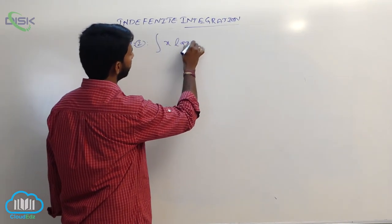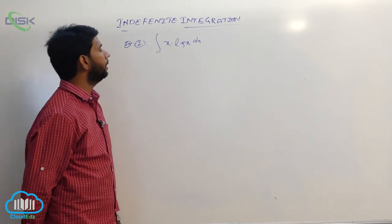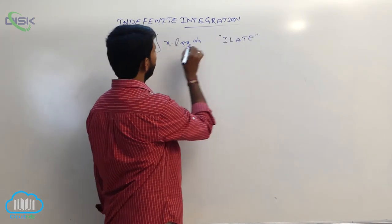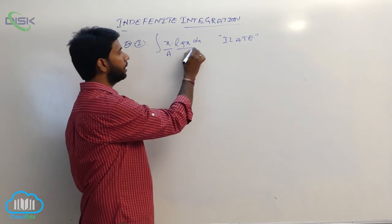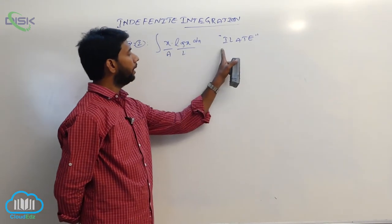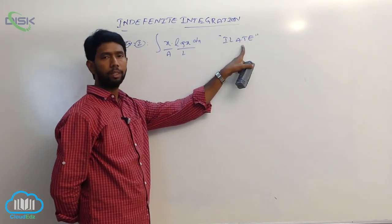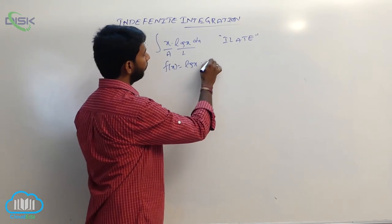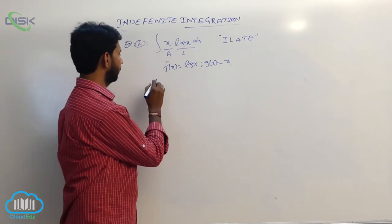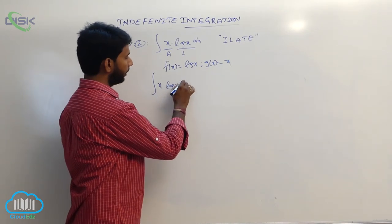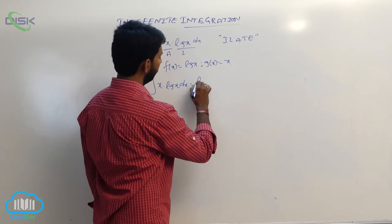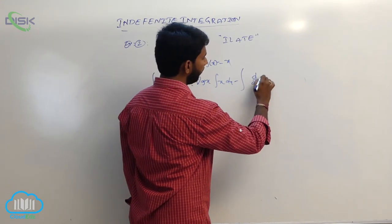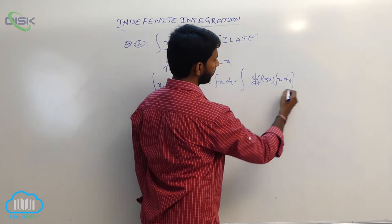Second example: integral of x into log(x) dx. Here x is an algebraic function and log(x) is a logarithmic function. From the word ILATE, the first function is the logarithmic function and the second function is the algebraic function. That is, f(x) = log(x) and g(x) = x. Applying by parts: integral of x·log(x) dx equals log(x) into integral of x dx, minus integral of d/dx of log(x) into integral of x dx, whole dx.